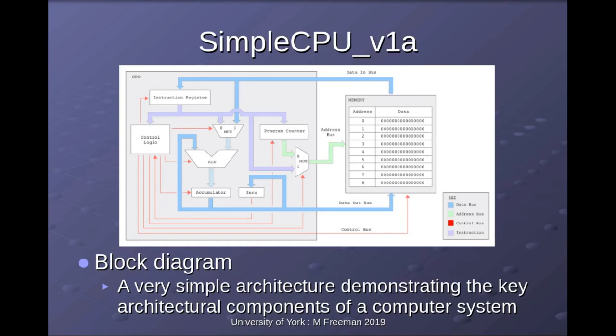The first computer we're building is one I designed a few years ago: the Simple CPU version 1A. It's a very simple computer — an accumulator-based architecture, which means all operations are based around a single data register, the accumulator. This is a common architecture you'd see in first-generation computers. Computer architectures are classified by the technologies they use: first, second, third, and fourth generations.